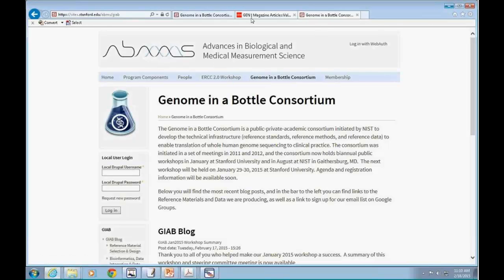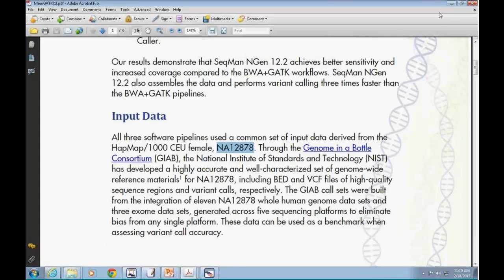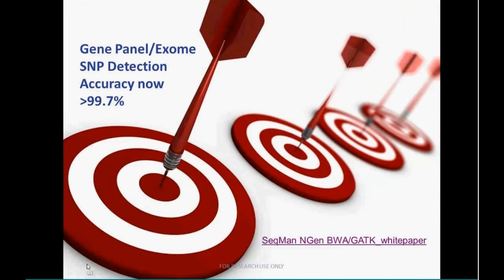Check out our white paper on our website, and we'll talk about more of that in the webinar today. Our accuracy is greater than 99.7%, using the Genome in a Bottle standard. Now, the standard isn't quite 100% accurate, so the real accuracy is somewhere between 99.7 and 100, and we're still working to figure out exactly what that is.